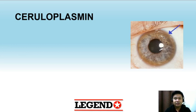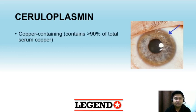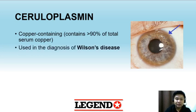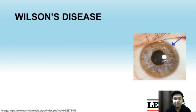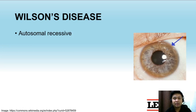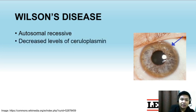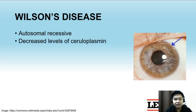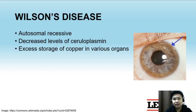The next serum protein is ceruloplasmin. Ceruloplasmin is a copper-containing protein that contains more than 90% of total serum copper, and it is used in the diagnosis of Wilson's disease. Wilson's disease is an autosomal recessive condition with defective copper transport, manifesting with decreased levels of ceruloplasmin and excess storage of copper in various organs.